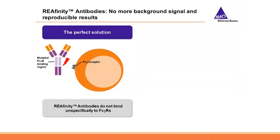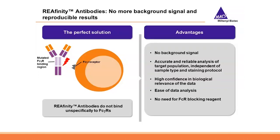Therefore, the perfect solution is to use an antibody that by its nature prevents binding to Fc receptors, as is the case for our Reaffinity antibodies. This means you get no background signal caused by Fc receptor binding, resulting in reliable data independent of your experimental setup.